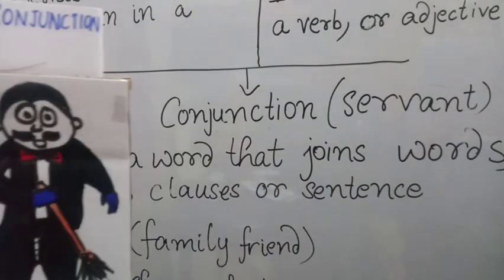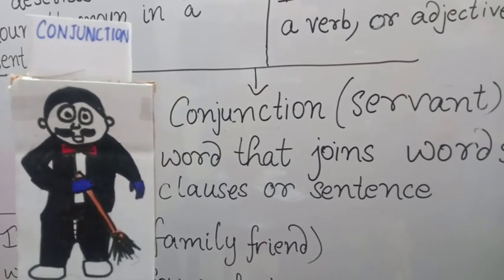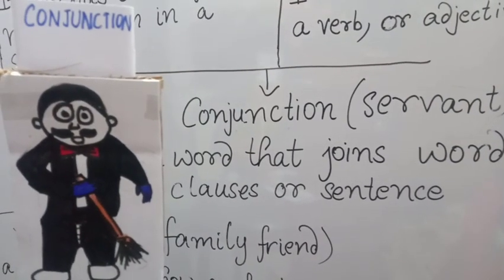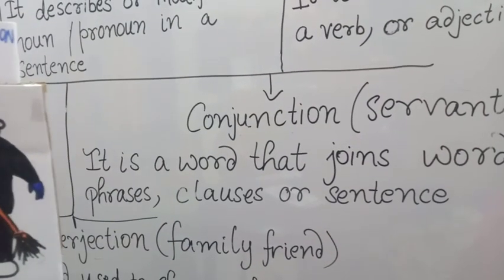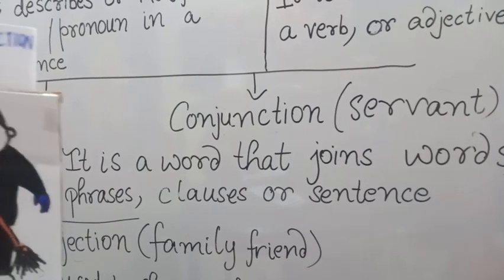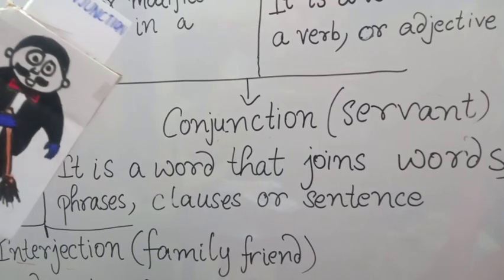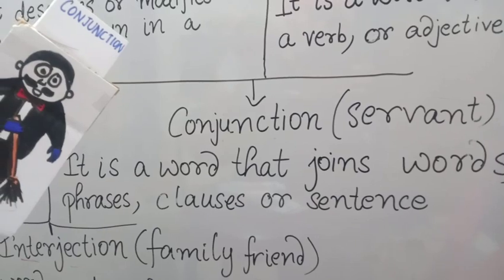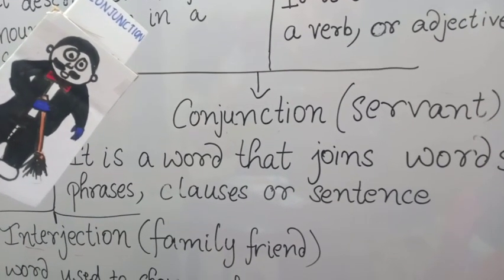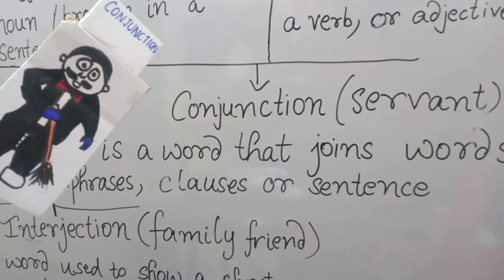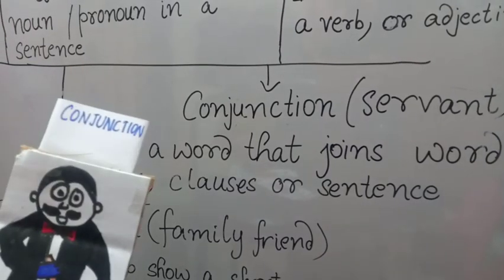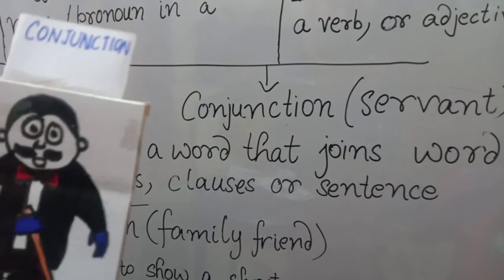Hello friends, I am Conjunction and you can call me the man Friday of the grammar family. Conjunction has introduced himself as the man Friday of the grammar family — that is, the one who can do all kinds of work for everyone in the family, whether it be noun, verb, pronoun, adjective, or adverb. He is helpful to everyone. It is a word that joins words, phrases, clauses or sentences. Conjunction means to conjunct, to join — like 'he and she', 'handsome and smart', 'in the car or by the train'. It joins words without affecting the meaning of the sentence.